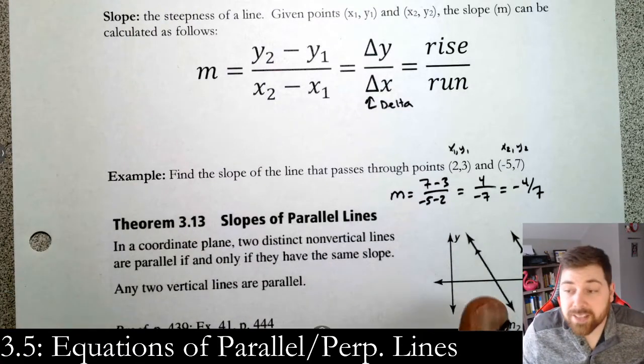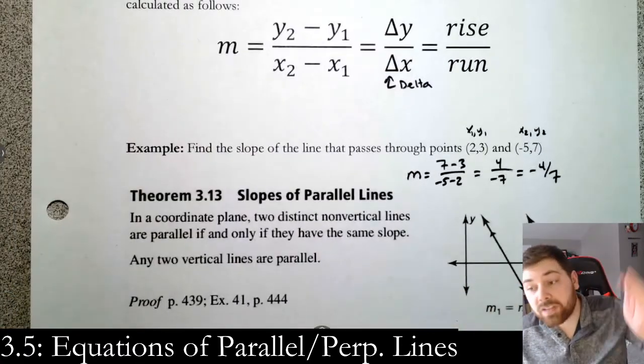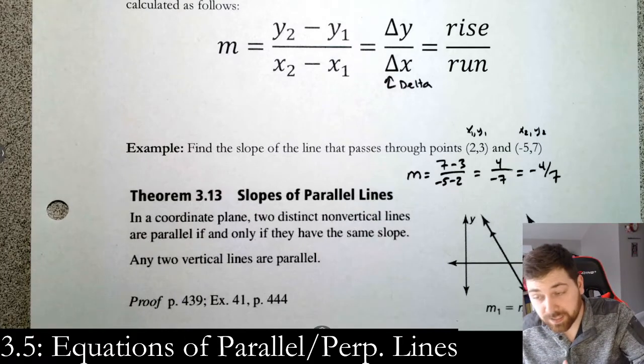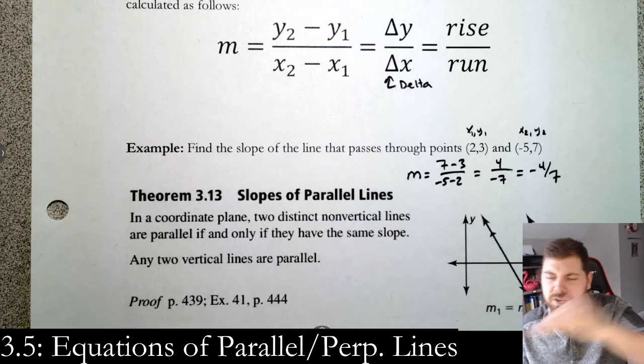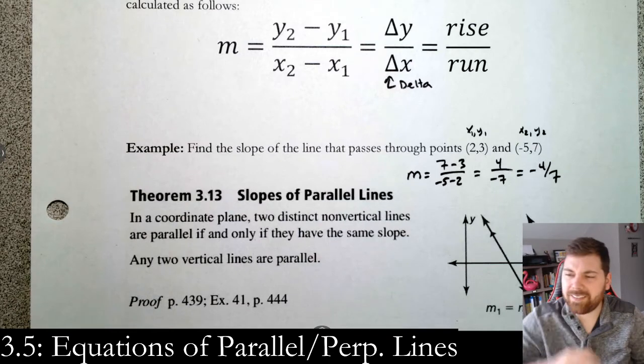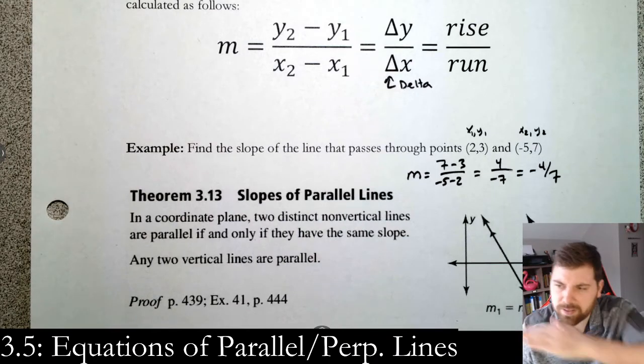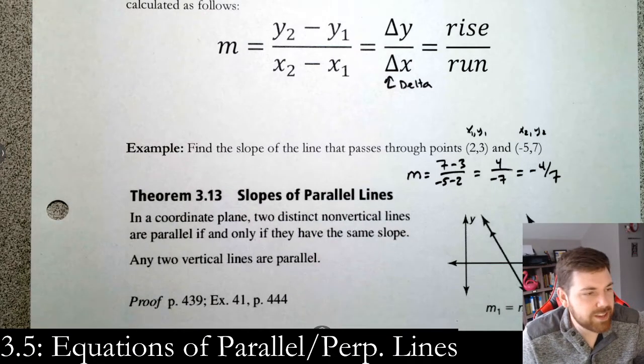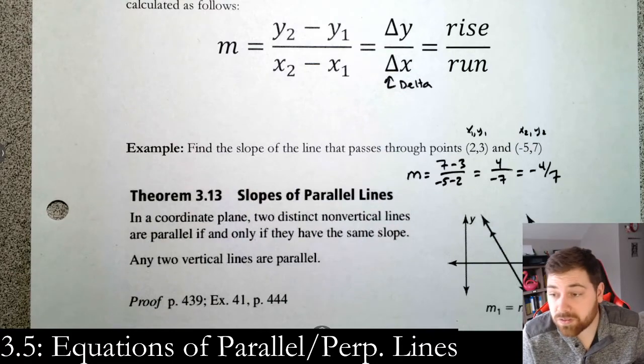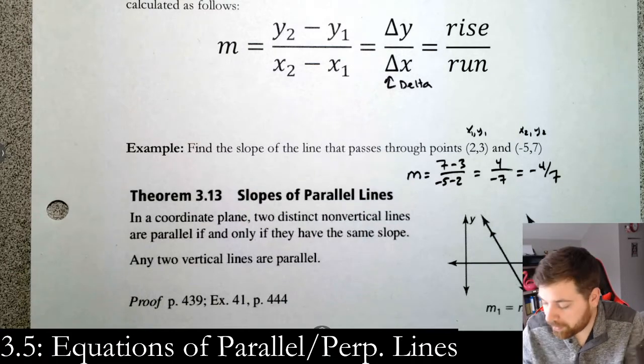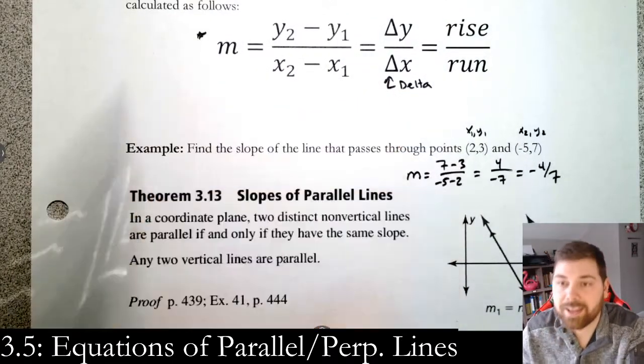In middle school you learned all kinds of things about that. It's negative, so that means the line's going down. It's less than 1, so it's pretty flat—not quite level, but pretty flat. Remind yourself about slope. Make sure you know this formula, it's going to be pretty important.